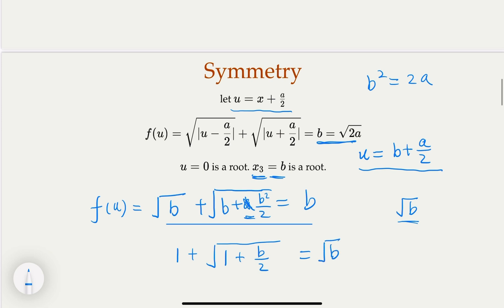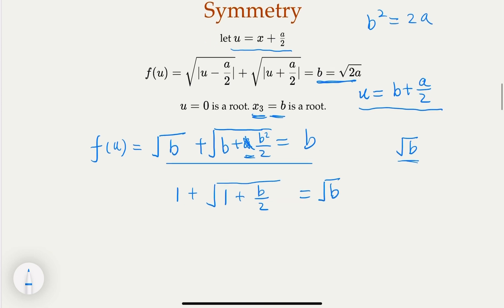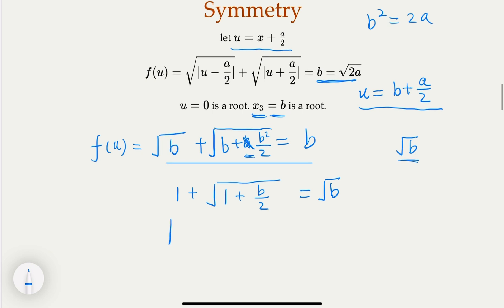What do we get is 1 + √(1 + b/2) = √b. Of course, you're going to do some algebra here, move 1 to the right hand side, you get √b - 1 on the right hand side. And then you square, now this time when you square it, it will help you.